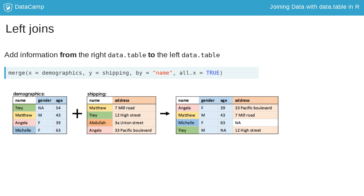In other words, a left join will add information from the data table on the right to the data table on the left. This is useful when you have two data tables from different sources, but you're really only interested in the observations from one.